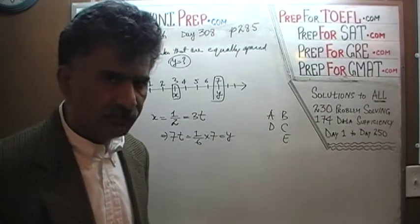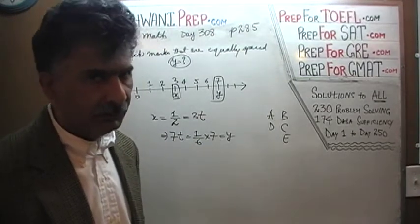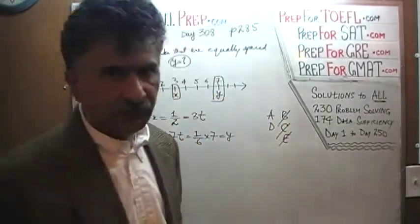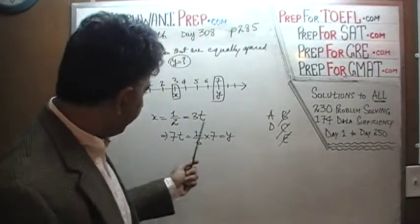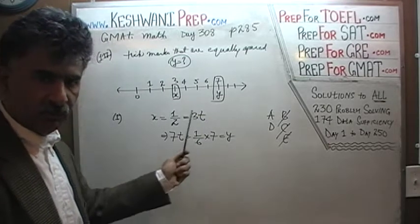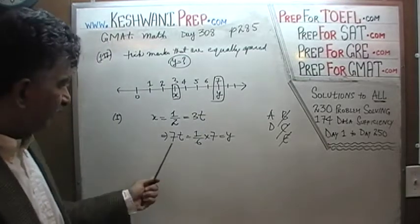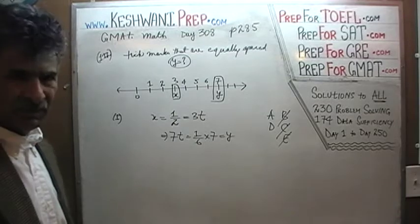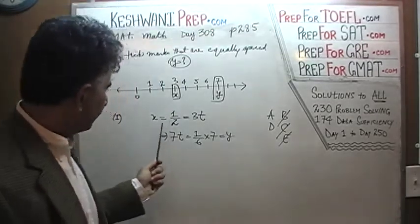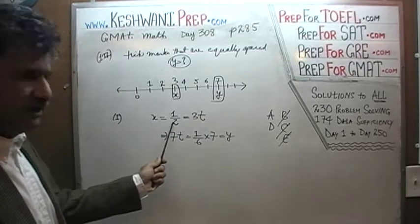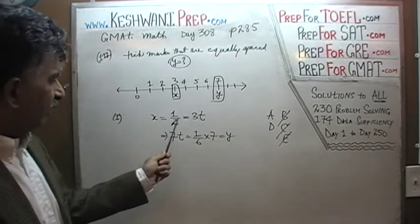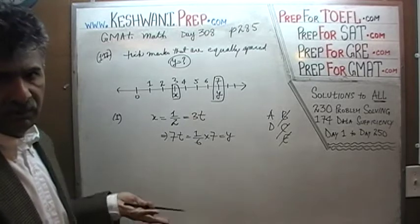Now that we have established that the first statement by itself is enough, we know that the answer cannot be B, C, or E — it would have to be either A or D. Now, the reason I finished this entire process is because it was only a two-step process. But it was actually a waste of time. As soon as we realized that three t's equals one-half, we were done. If we can figure out the value of three t's, we can figure out the value of seven t's.